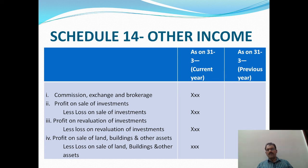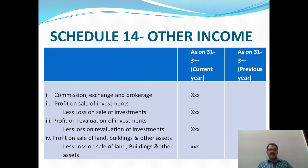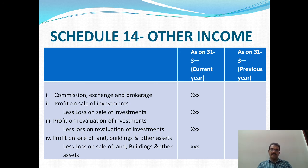Schedule 14 is Other Income. The first item is Commission, Exchange and Brokerage received from various sources. The second item is Profit on Sale of Investments — from the profit, deduct Loss on Sale of Investments, and the net balance is shown in the amount column. The next item is Profit on Revaluation of Investments — from the profit, deduct Loss on Revaluation of Investments, and the remaining balance is shown.